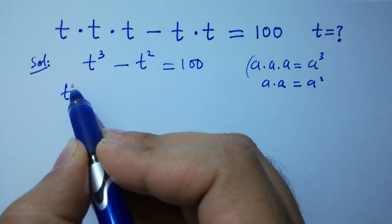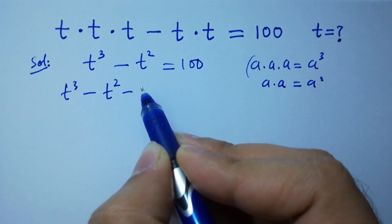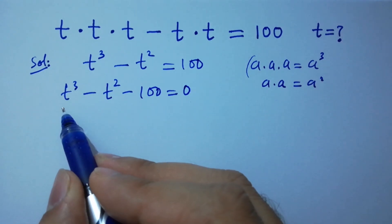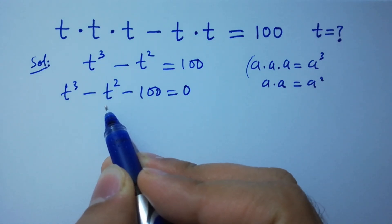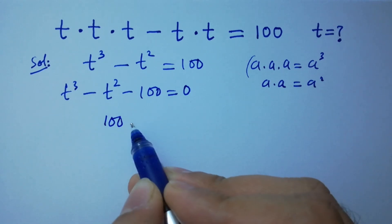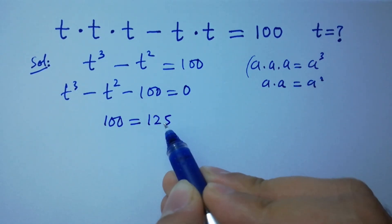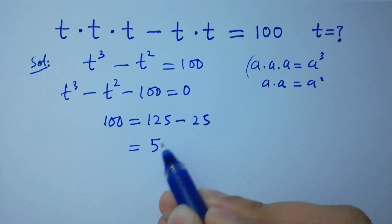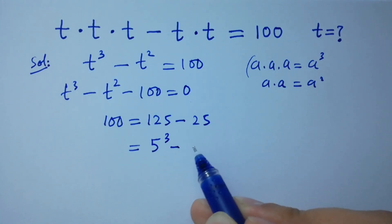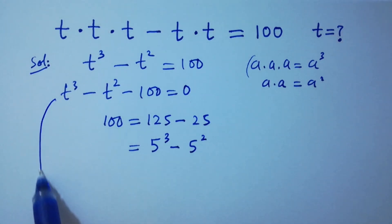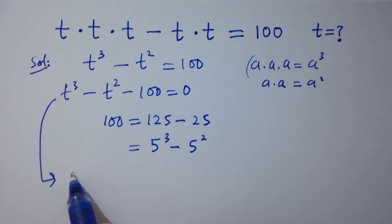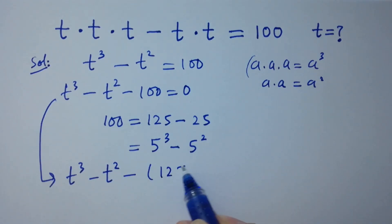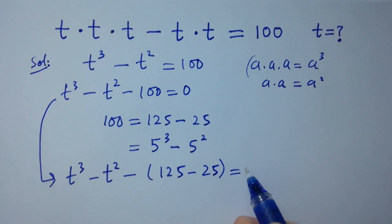So t cubed minus t squared minus 100 equals 0. If we look at t cubed and t squared, we should take 100 equal to 125 minus 25, where 125 is 5 cubed and 25 is 5 squared. Then it becomes t cubed minus t squared minus 125 minus 25 equals 0.